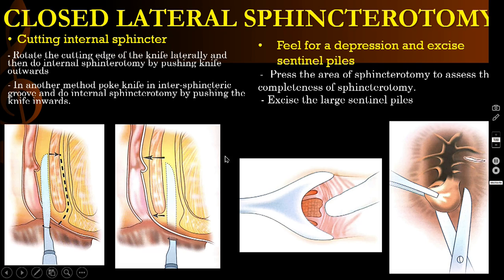After doing the internal sphincterotomy, you have to press the area of the puncture to assess the completeness of sphincterotomy. Pressing the area achieves hemostasis and also completes the sphincterotomy — whatever muscle fibers are still there will be divided by pressing. Finally, you have to excise the sentinel pile mass, that is, the fissure with the sentinel pile and hypertrophied papilla. This is the triad and all these things should be excised.